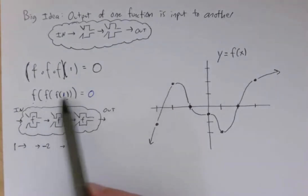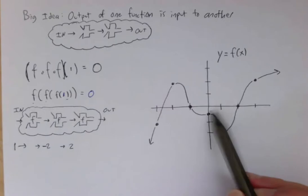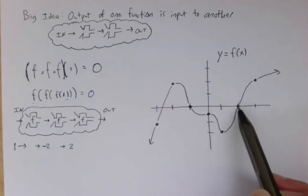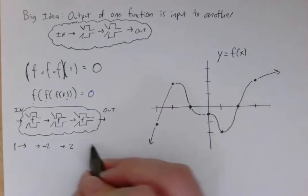So now I know what f of f of 1 is. So if f of f of 1 is 2, let's make that the input again to the last application of the f function. So when the input is 2, I see that the output, the y value here is 0.